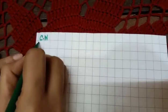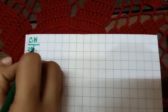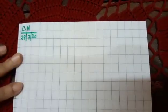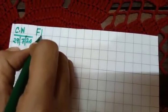Now here you will write C.W. and today's date: 29/7/20. Written. Now here you will write 'Fill the Missing Numbers.' Fill — F, I, L, L.